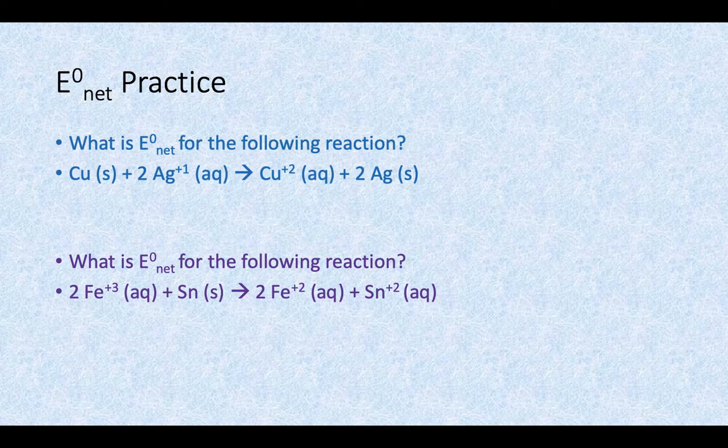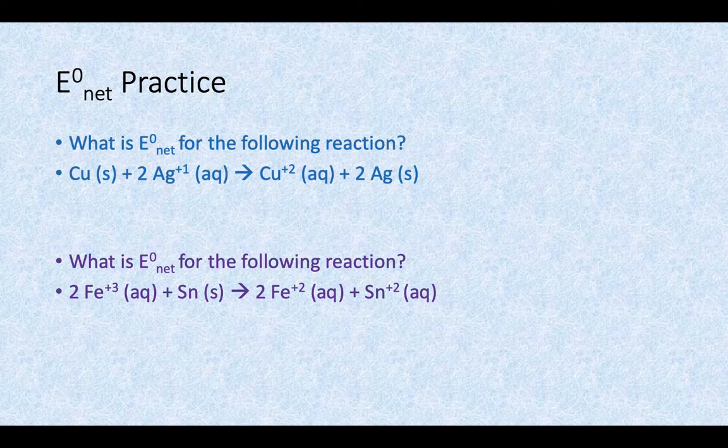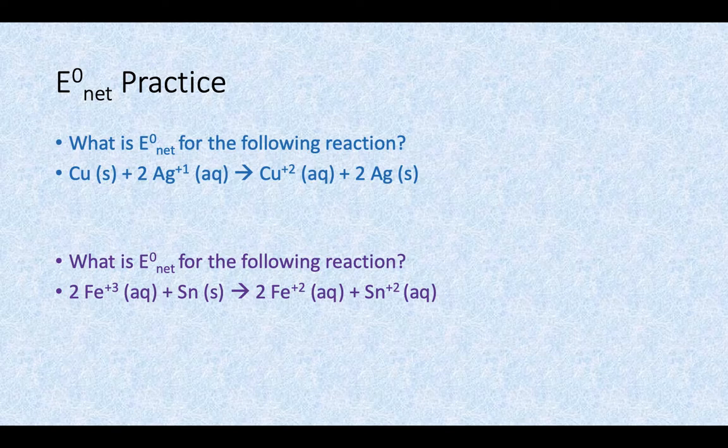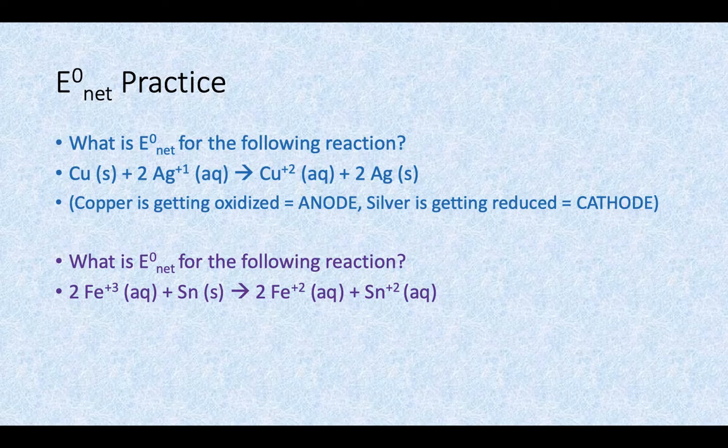The silver goes from plus 1 to neutral, so it's gaining electrons, it's being reduced, that happens at the cathode.